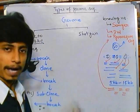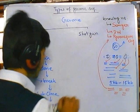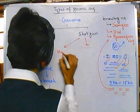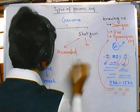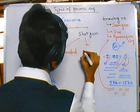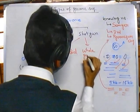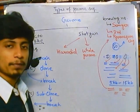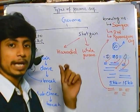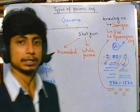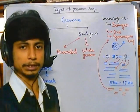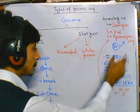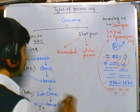Shotgun sequencing can be divided into two parts: hierarchical sequencing and whole genome sequencing. In hierarchical sequencing, before doing the shotgun process, we keep track of some markers and map our gene to some extent. We map the gene, get a physical map based on some genetic markers, so first of all we obtain a physical map of the genome.